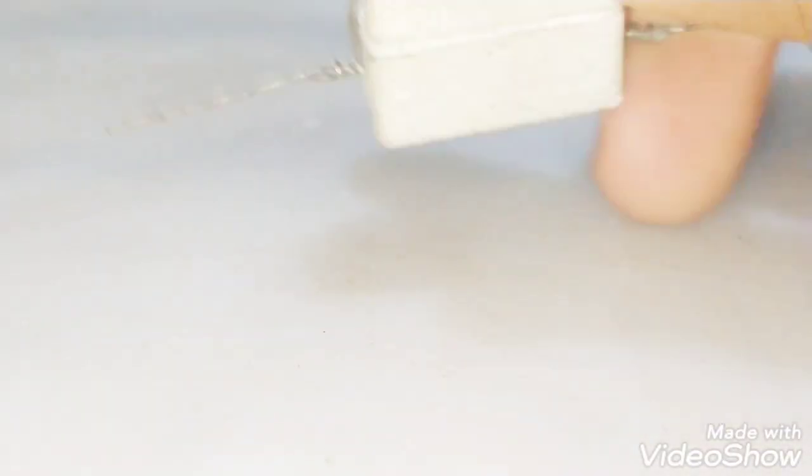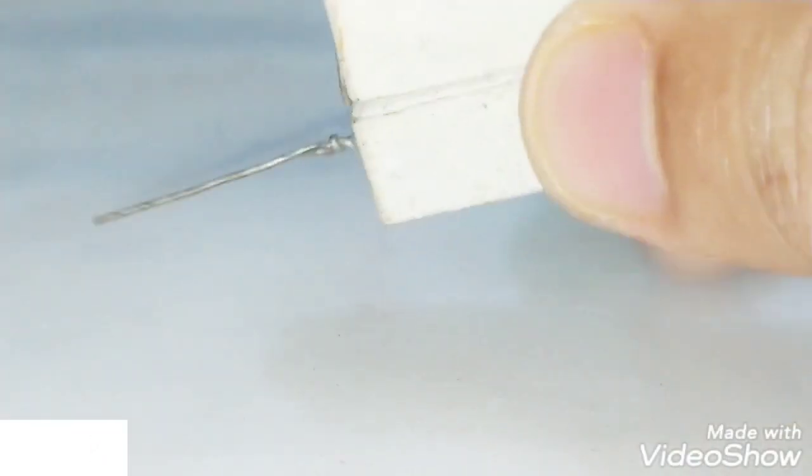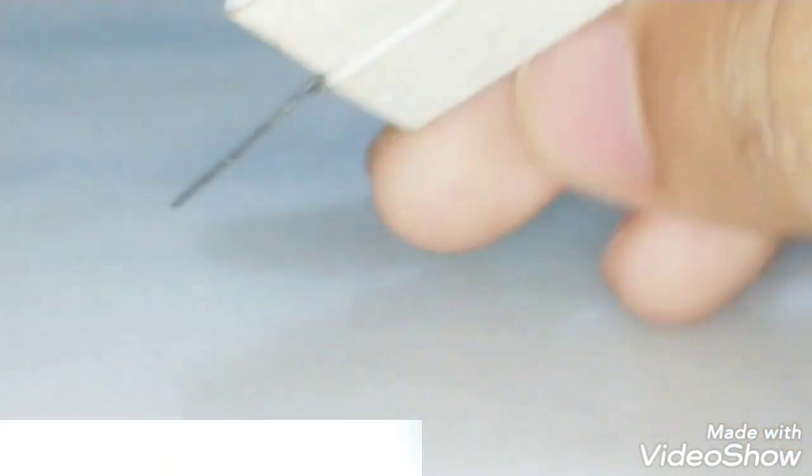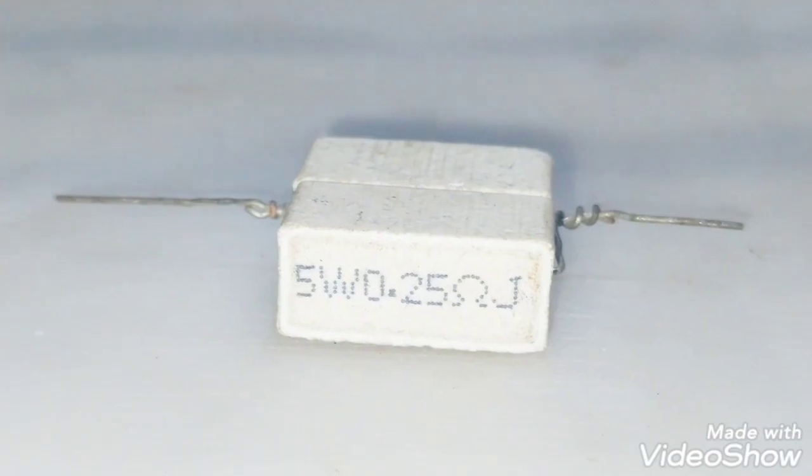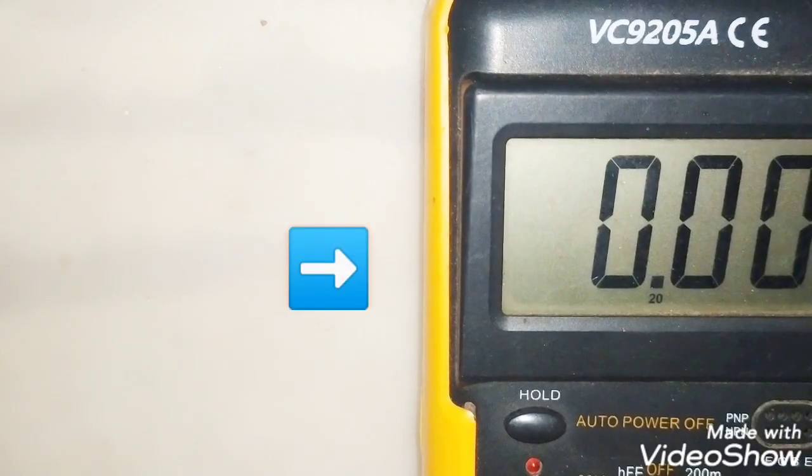And here I'm using 2, 0.25 ohm resistors, so total resistance is 0.01 ohm. This multimeter will show the value of amp that we will measure using resistor.